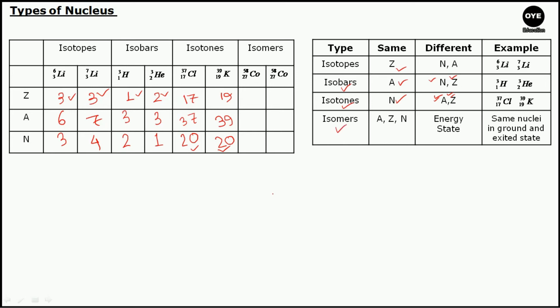The last classification is isomers. Isomers have the same mass number, atomic number, and neutron number, but differ in their energy state. Just as electrons can exist in a ground energy state or an excited state, nuclei can also exist in different energy levels. When a nucleus can exist in two different energy levels, those nuclei are known as isomers. For example, cobalt nuclei with atomic number 27, mass number 58, and neutron number 31 can exist in two different energy levels — together they are known as isomers.